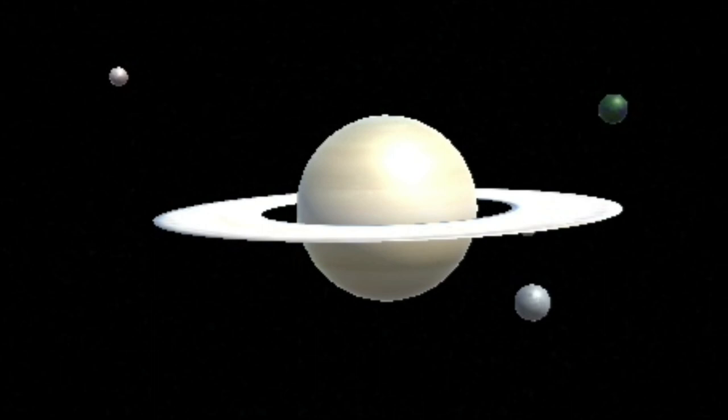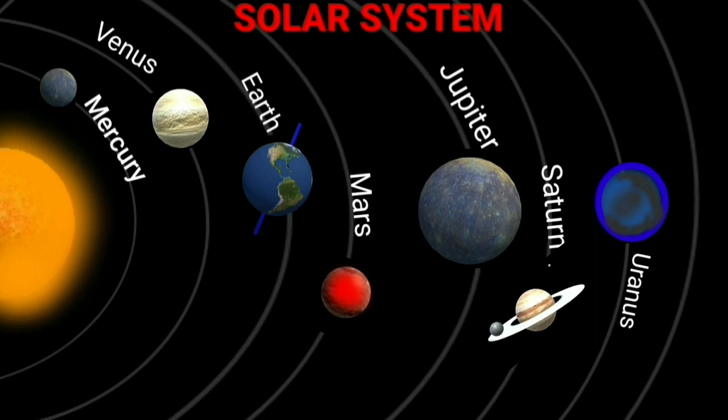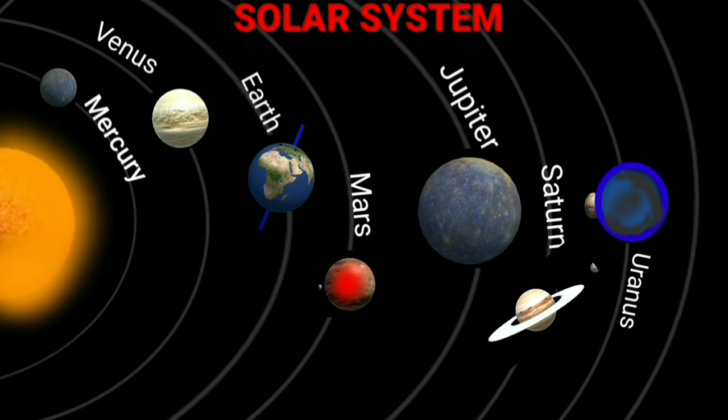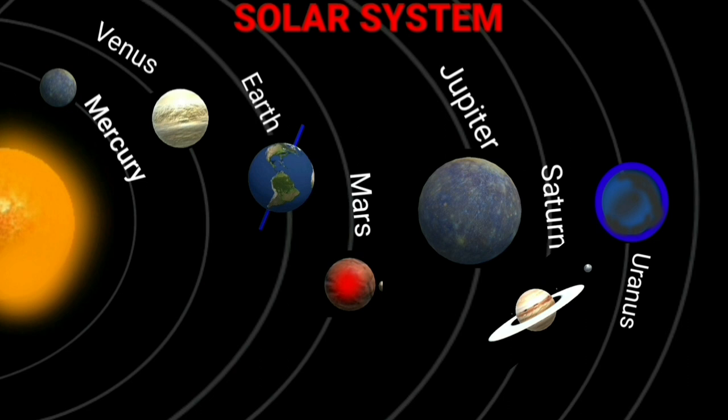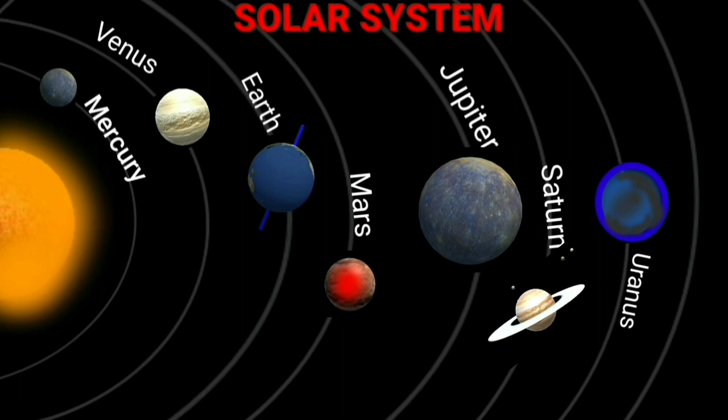Uranus is the seventh planet from the sun. It takes 84 years to complete one revolution around the sun. It has 21 satellites or moons of its own. It rotates about its axis from east to west in contrast to other planets, which rotate from west to east. Its atmosphere contains hydrogen and methane.